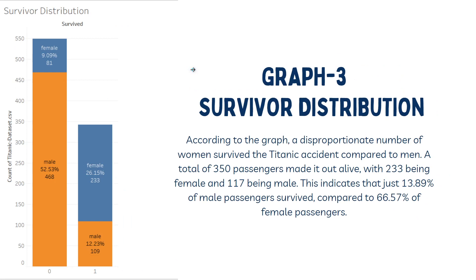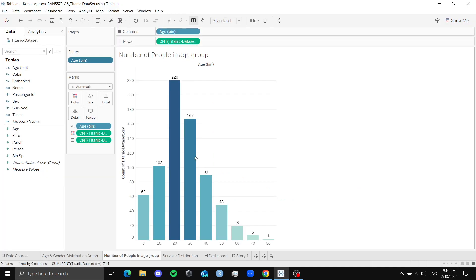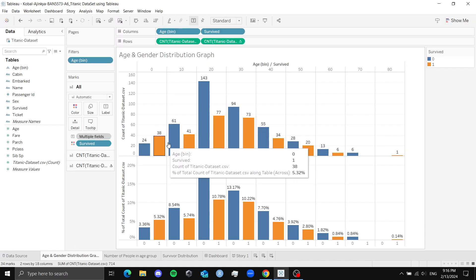The survivor distribution graph shows that a disproportionate number of women survived the Titanic accident compared to men. A total of 350 passengers made it out alive, with 233 being female and 109 being male. We all know that the 'women and children first' rule was followed during ship evacuation, giving preference to women and children. Another explanation could be that men were more prone to making selfless sacrifices.